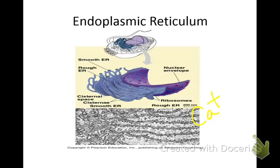Alright, make sure you can say it makes lipids, breaks down carbs, detoxes blood, and stores calcium. So that's the four things the smooth ER does. The rough ER — the ribosomes are bound to the outside of the organelle, and they're going to move the proteins around.